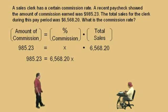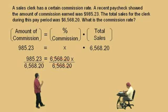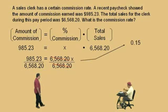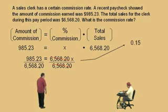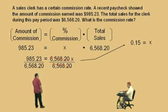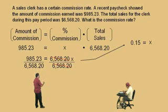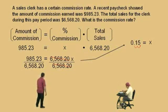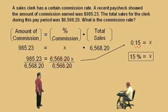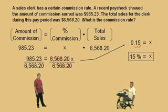How do we solve this, Charlie? Divide both sides by $6,568.20. The right-hand side cancels. What's this quotient? 0.15. Very nice — and that equals x. Remember, x represents the percent commission. So how do we change that decimal to a percent? Move it right twice. And we get 15%. Very nice, Charlie. Whew — what fun! Let's take a break. We'll see you all again soon.